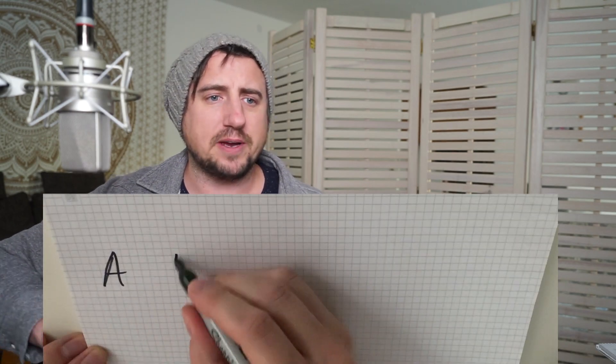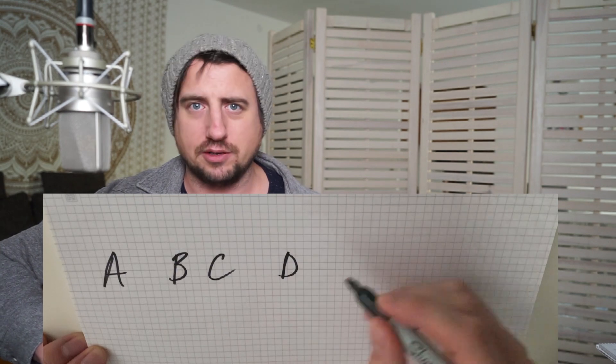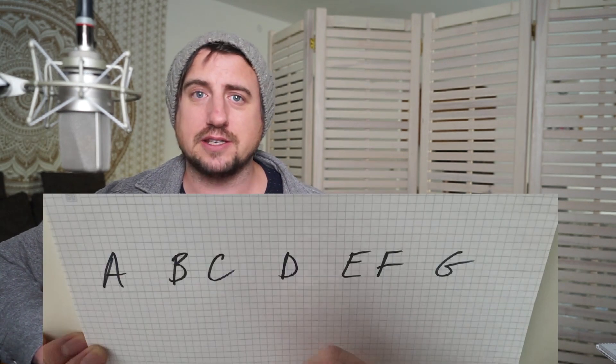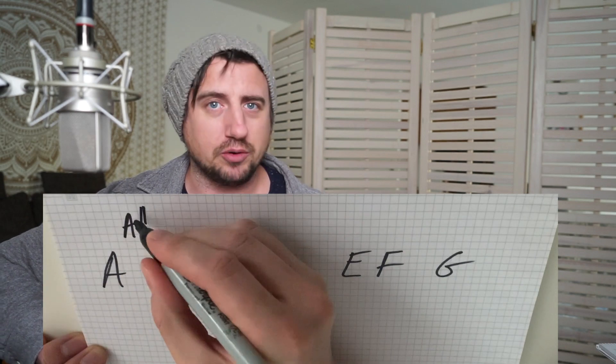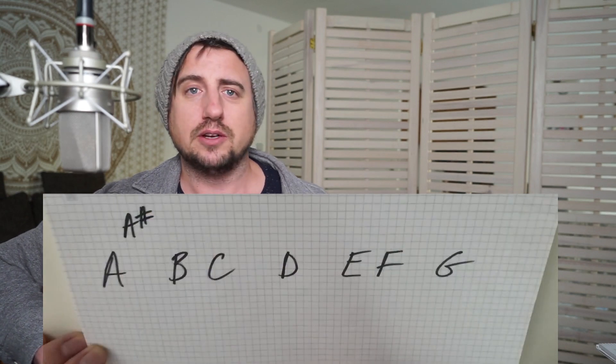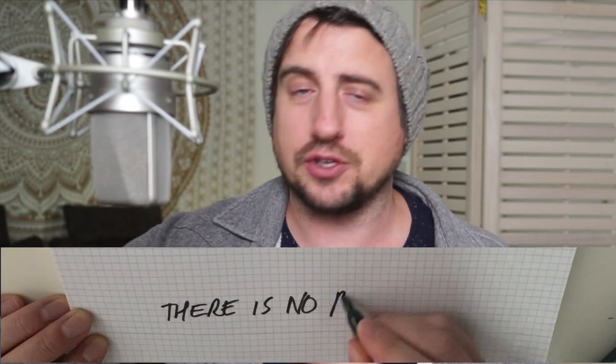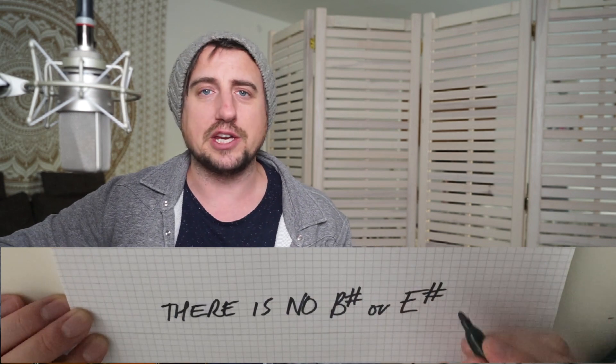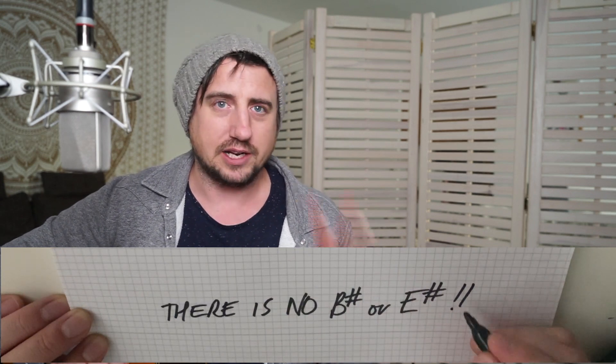The thing to remember with all of the notes is you basically have the alphabet of A to G — A, B, C, D, E, F, G. Above each of those letters is what's called a sharp note, so it would be the letter followed by the word sharp. So A to A sharp. Now there's only one thing I need you to remember: there is no B sharp and there is no E sharp. That's the two exceptions.